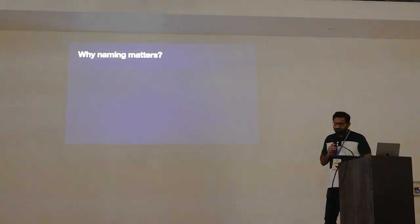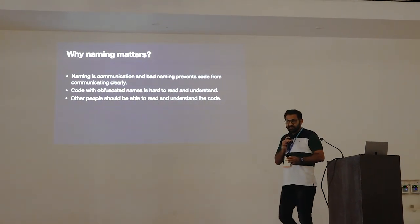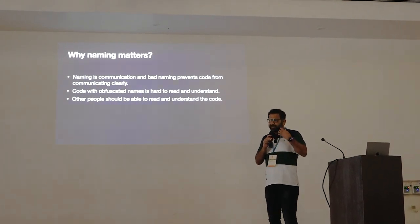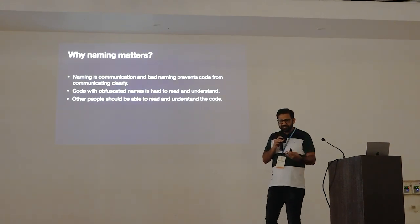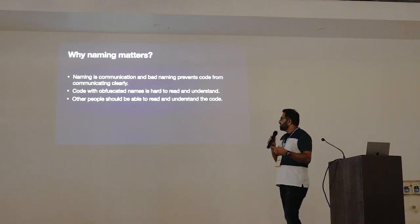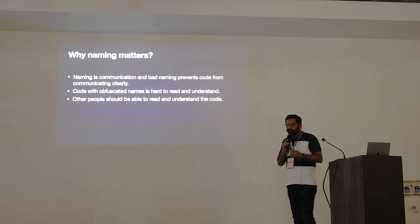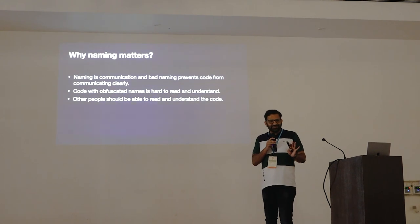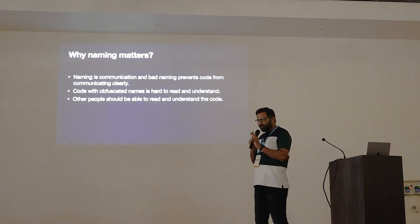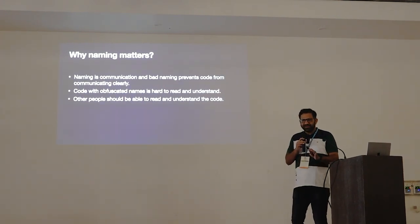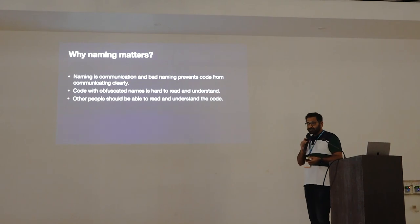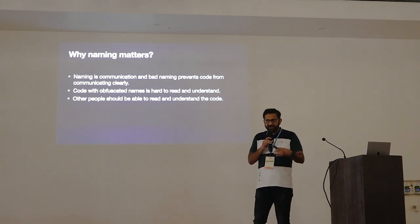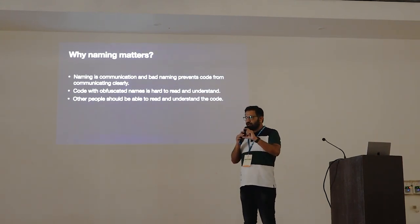Why does naming matter? Naming is communication. Just as you communicate with people by calling their names, to communicate with your code you need proper names for your functions, methods, classes, and files. Code with obfuscated names is hard to read — if you use $A, $B, $C everywhere, you won't be able to understand what's happening. Proper naming makes your code readable. If you name your methods and classes properly, people can understand what's happening just by reading the names — they don't even need to look at all the logic. A CreateUser class, just by its name, tells people this class is responsible for creating a new user.